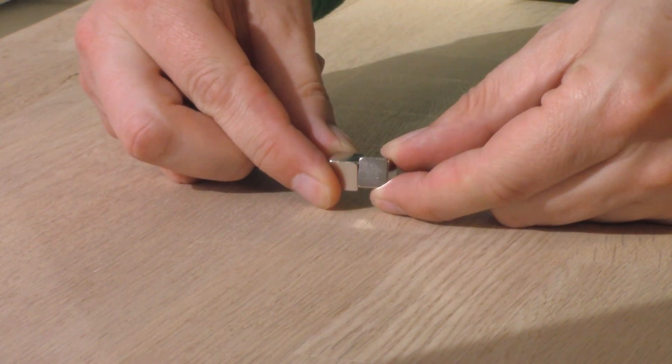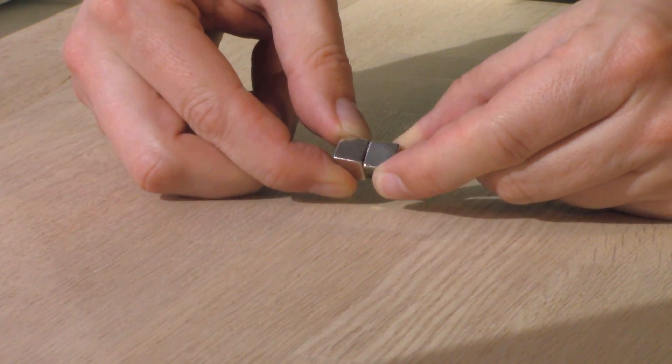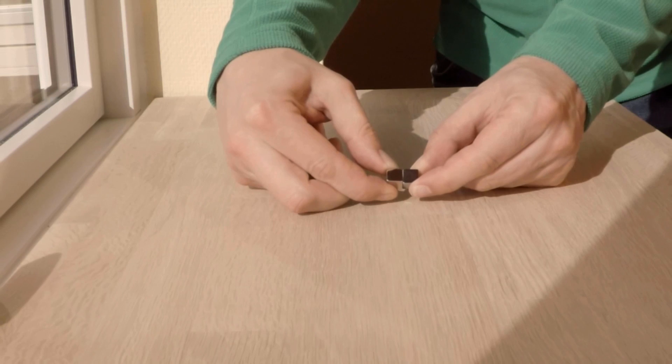Here are two cube magnets put together. Watch what happens when I try to turn them around. Here it is in slow motion. Notice how close I was to getting my skin pinched. It happens way faster than I can react.